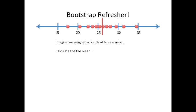Now, we can take these 12 measurements and use them to calculate the sample mean. The sample mean is not the mean for all mice on the entire planet — it's just the mean of the mice that we sampled. However, we can use bootstrapping and the data that we have here to determine what values would be reasonable for the global worldwide mean of all female mice on the planet. Now that we've calculated the sample mean, we can bootstrap the sample.